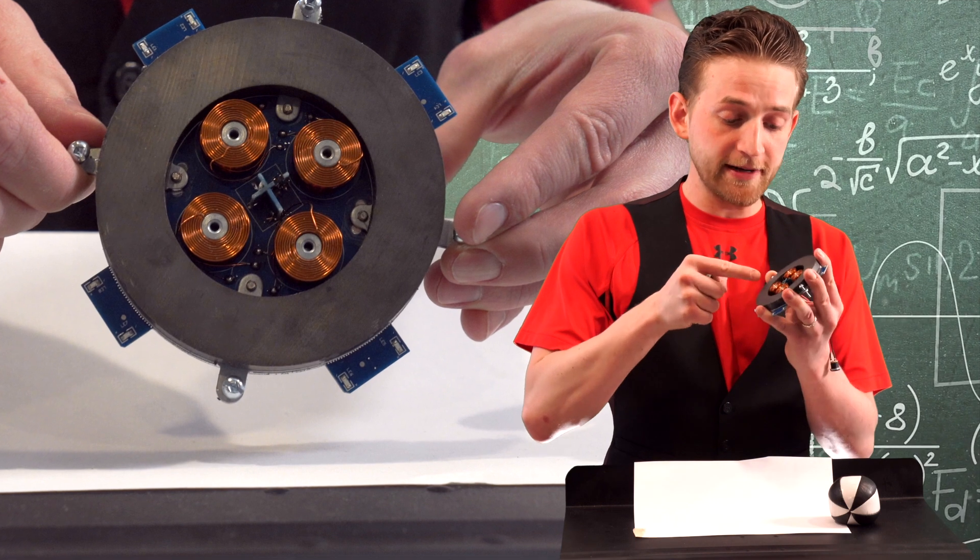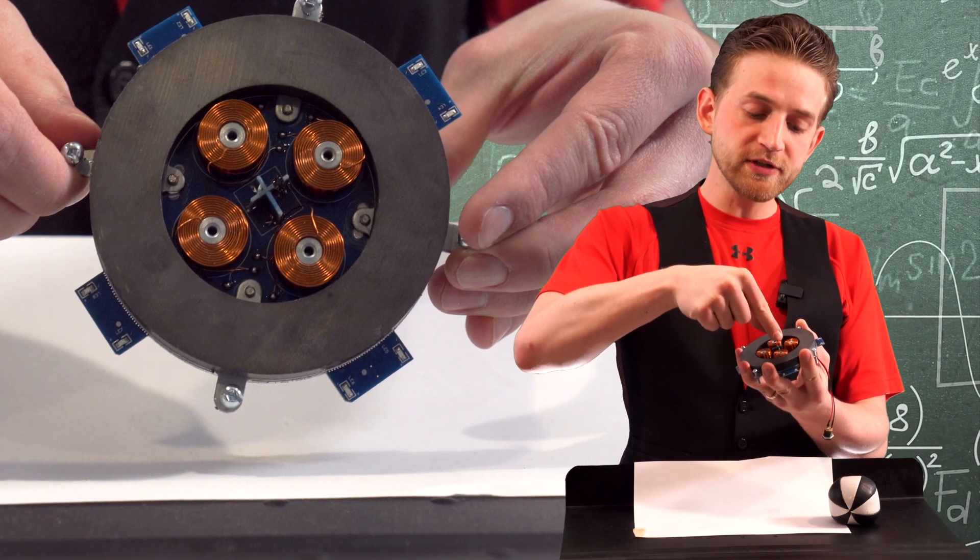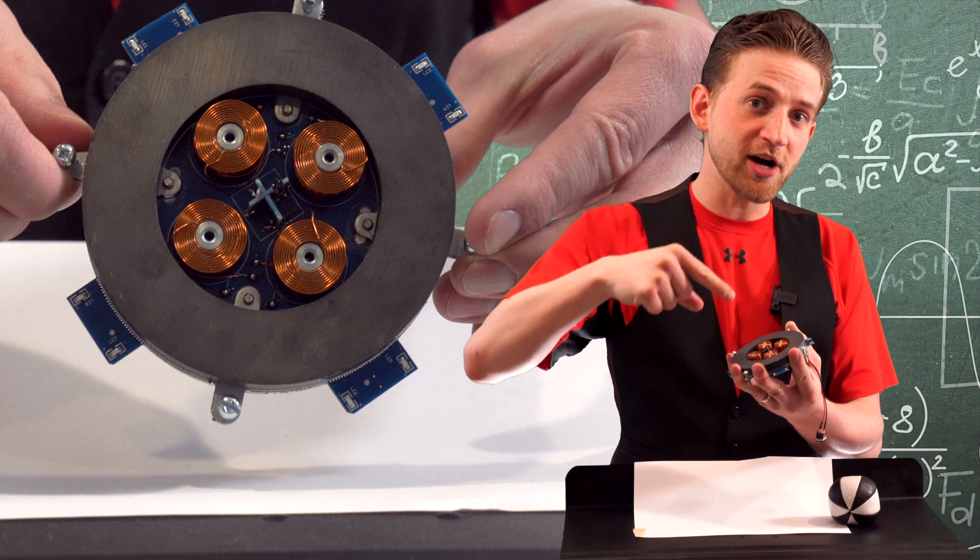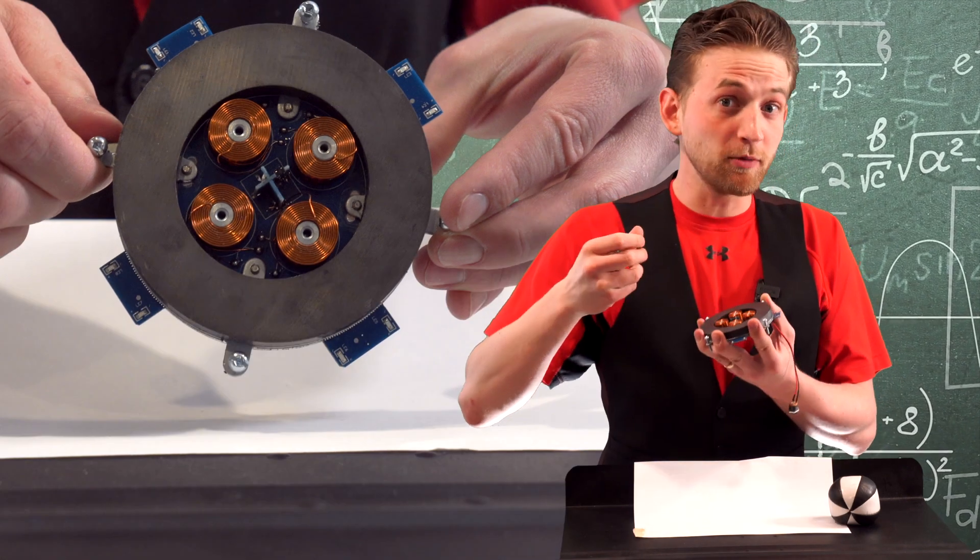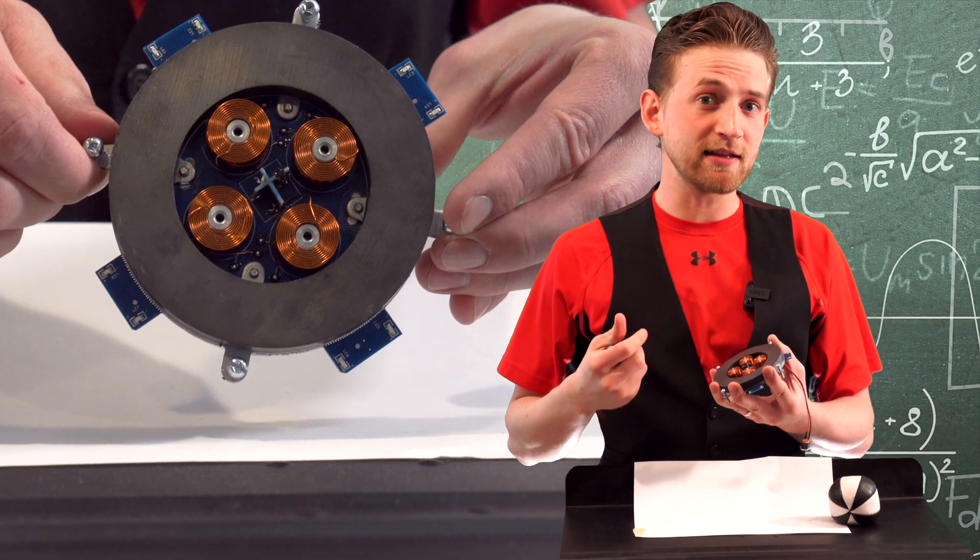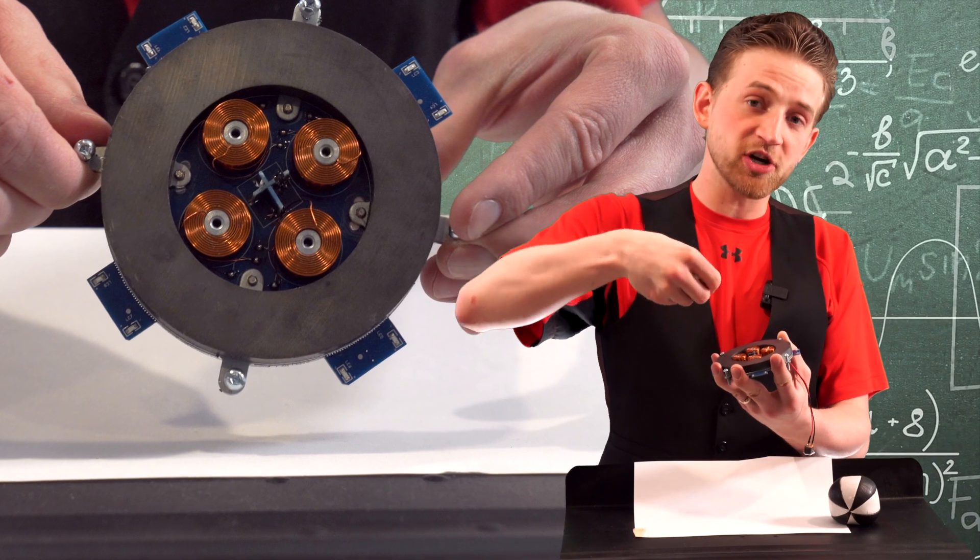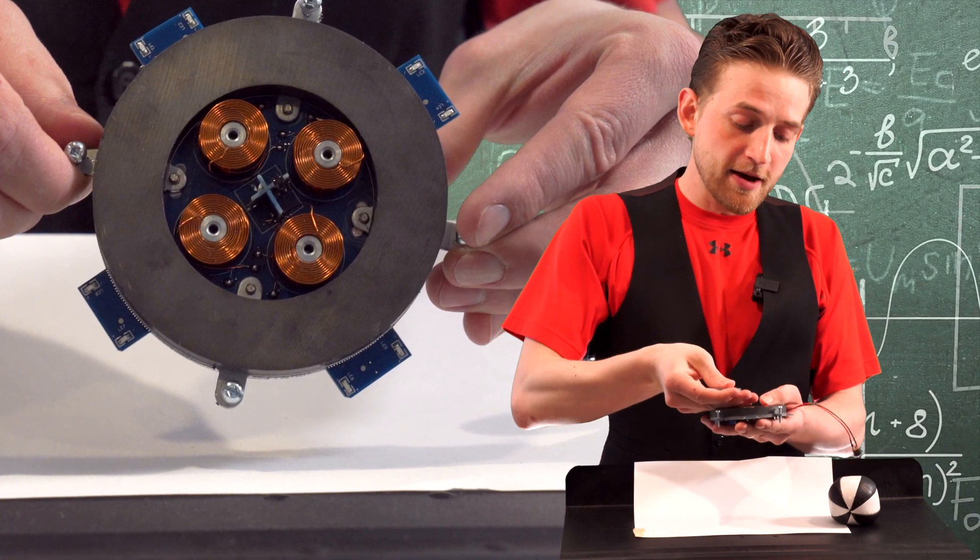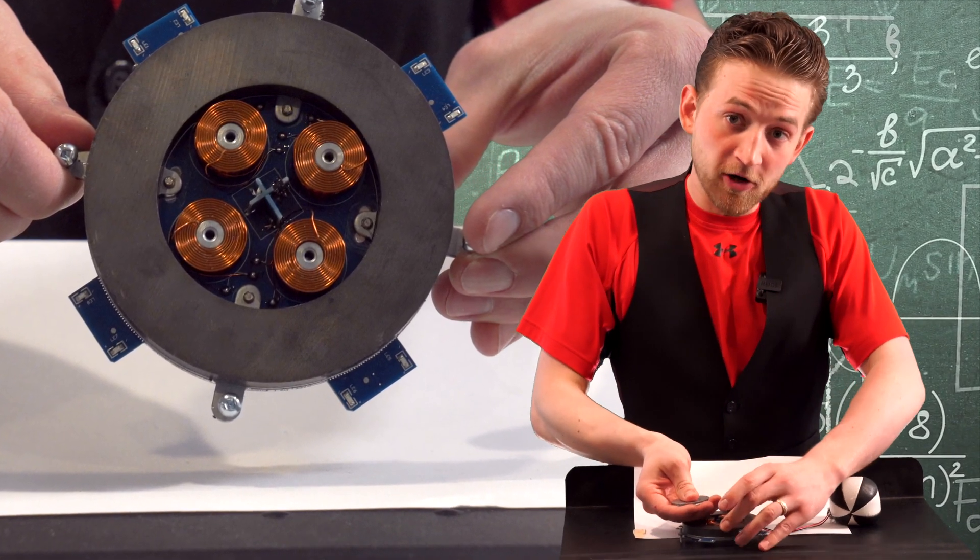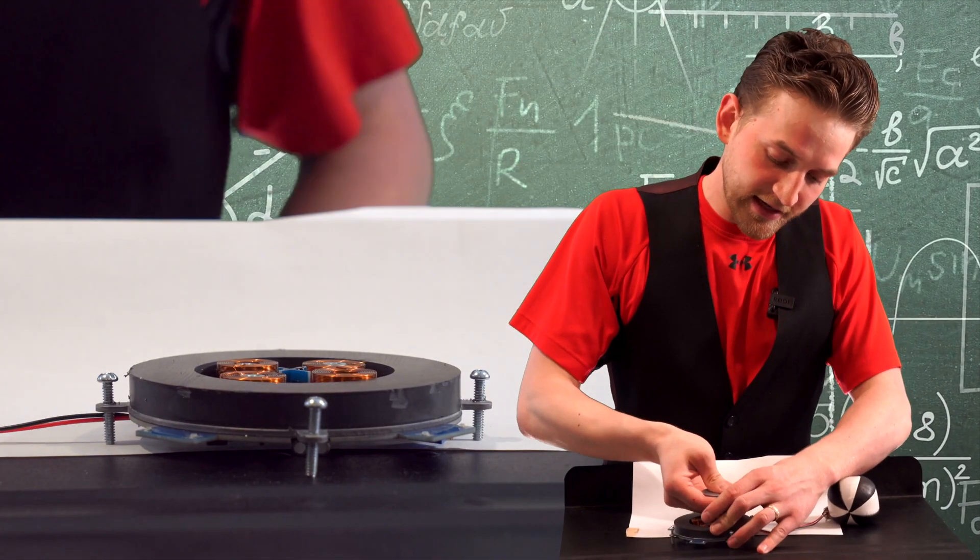So when it's plugged in, there is an equal opposing force on the inside as there is the attraction force on the outside. At its most basic level, that is how the magnetic levitation works. It's both being attracted to and repelled by the ferromagnetic ring and the electromagnets.